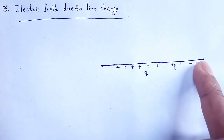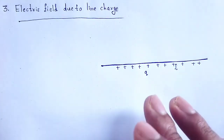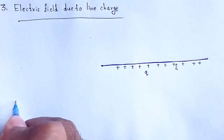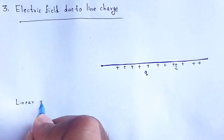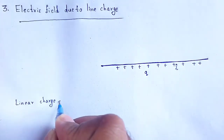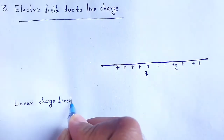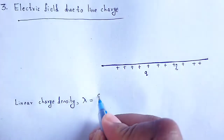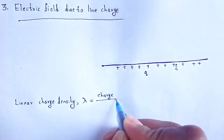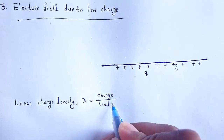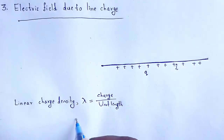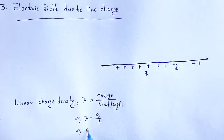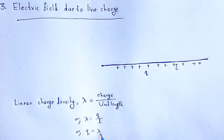But here, charge is distributed lengthwise, therefore we define a term called linear charge density, denoted by lambda, that is charge per unit length. Lambda is equal to charge Q per unit length l. Therefore, charge Q can be written in terms of linear charge density as lambda times l.